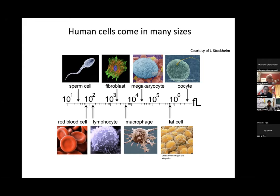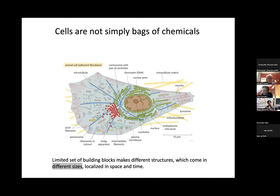Haldane writes: 'The most obvious differences between different animals are differences of size,' and he shows that a hare could not be as large as a hippopotamus, or a whale as small as a herring. His concluding insight is that 'for every type of animal there is a most convenient size.' You can clearly see this by comparing skeletons: the hare on the left versus the hippopotamus on the right — without scale bars, the difference in bone geometry tells you which is the much bigger animal.